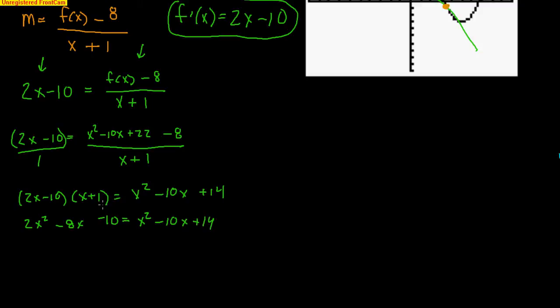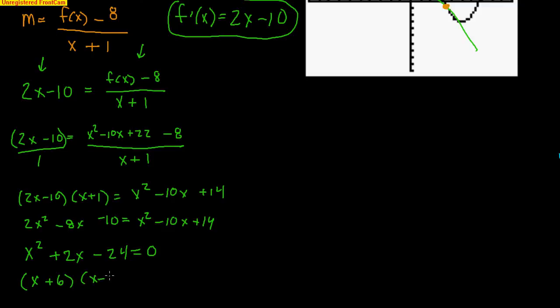I have a quadratic, so I move everything to one side. Subtracting x² and adding 10x and subtracting 14, I get x² + 2x - 24 = 0. Factoring gives (x + 6)(x - 4) = 0, so x = -6 and x = 4 are the two x values of the points of tangency.